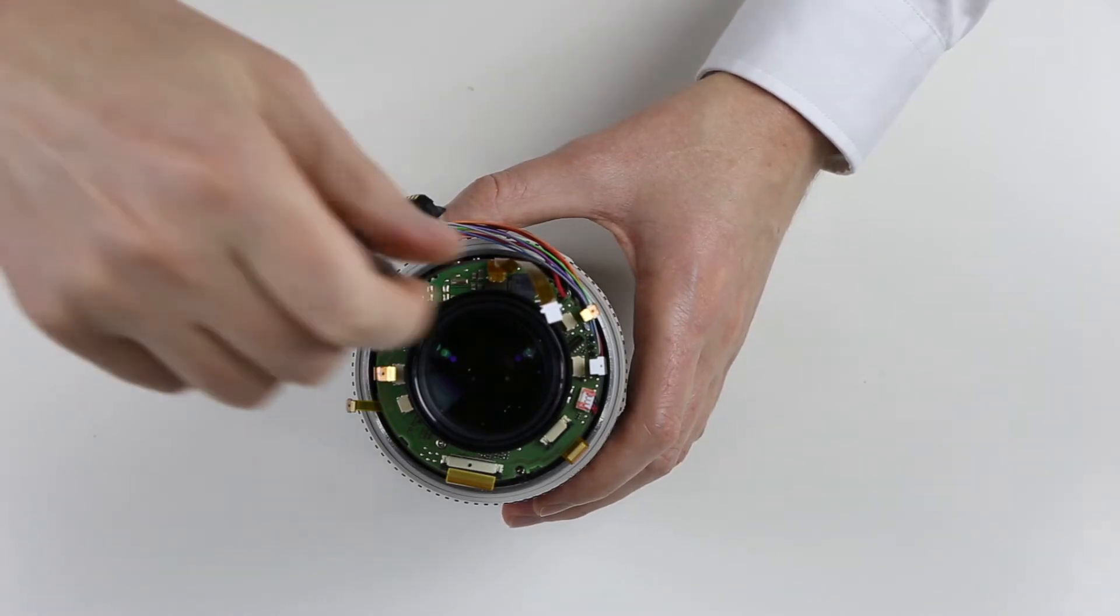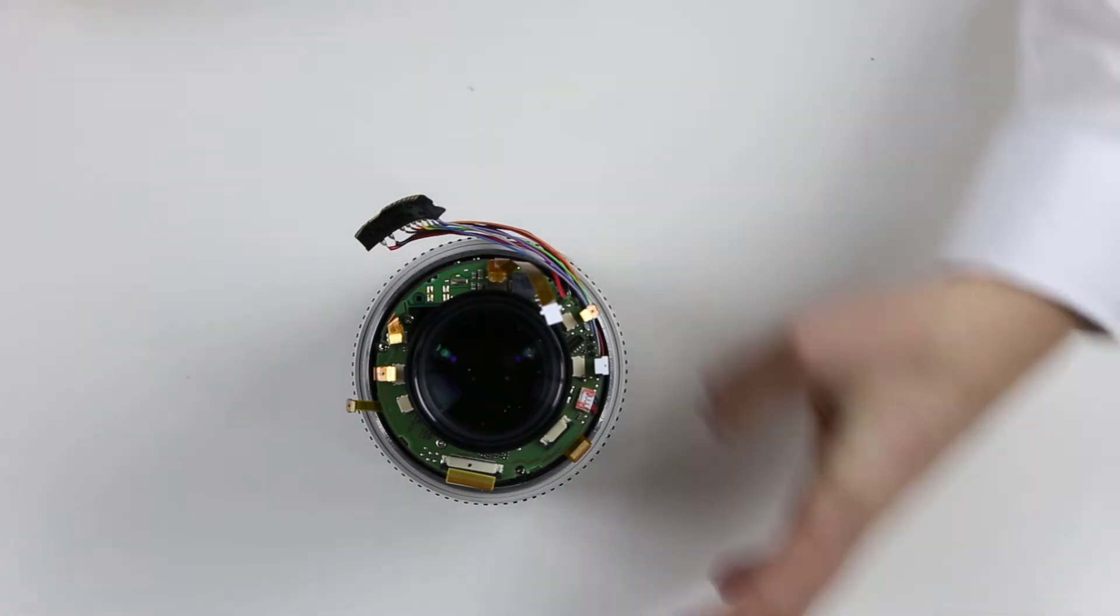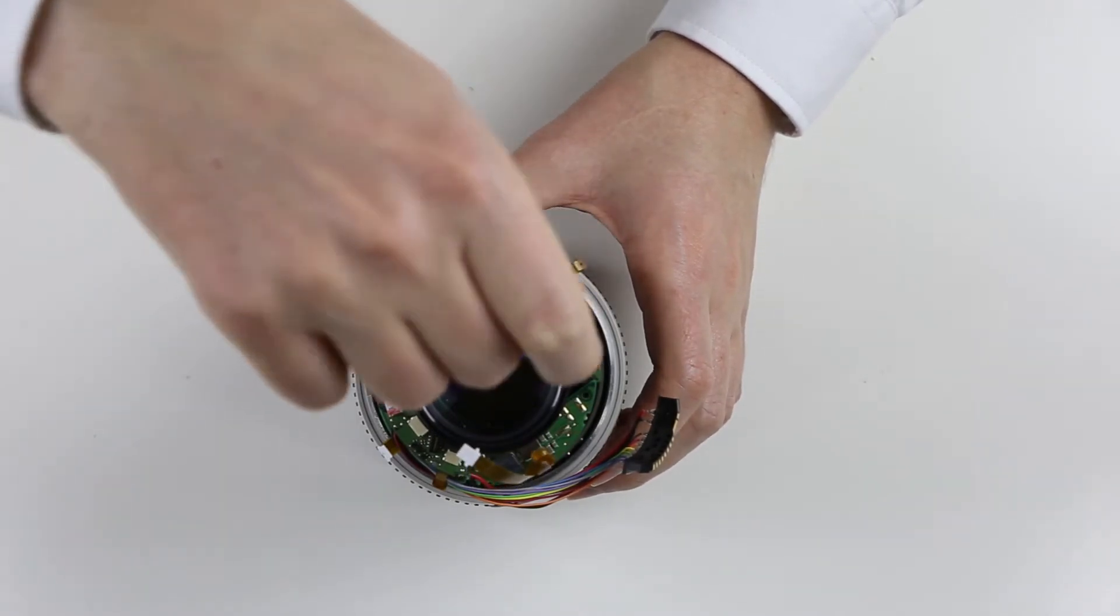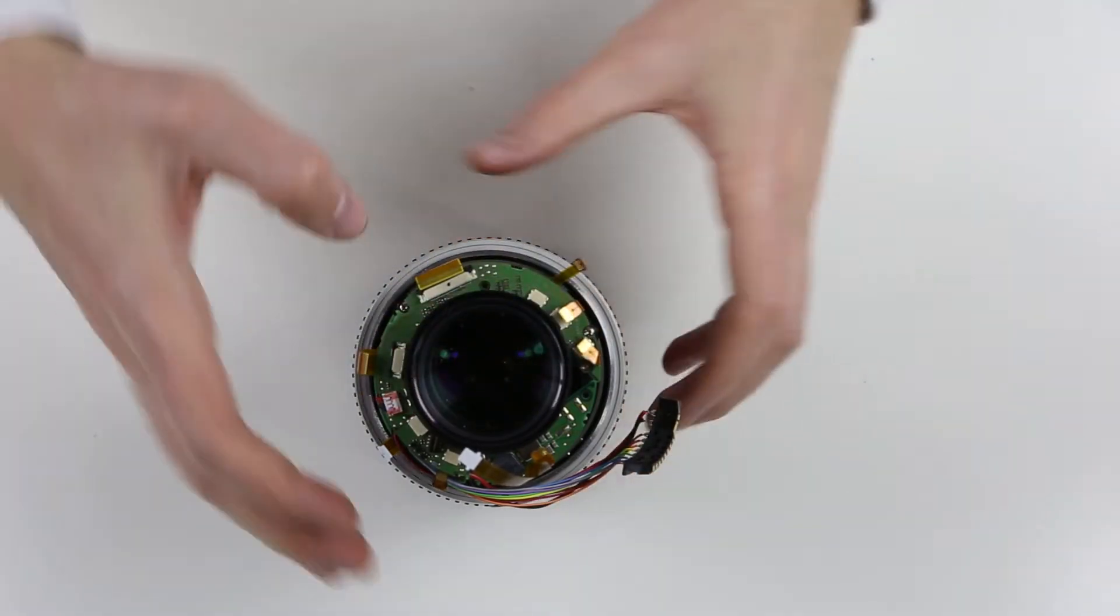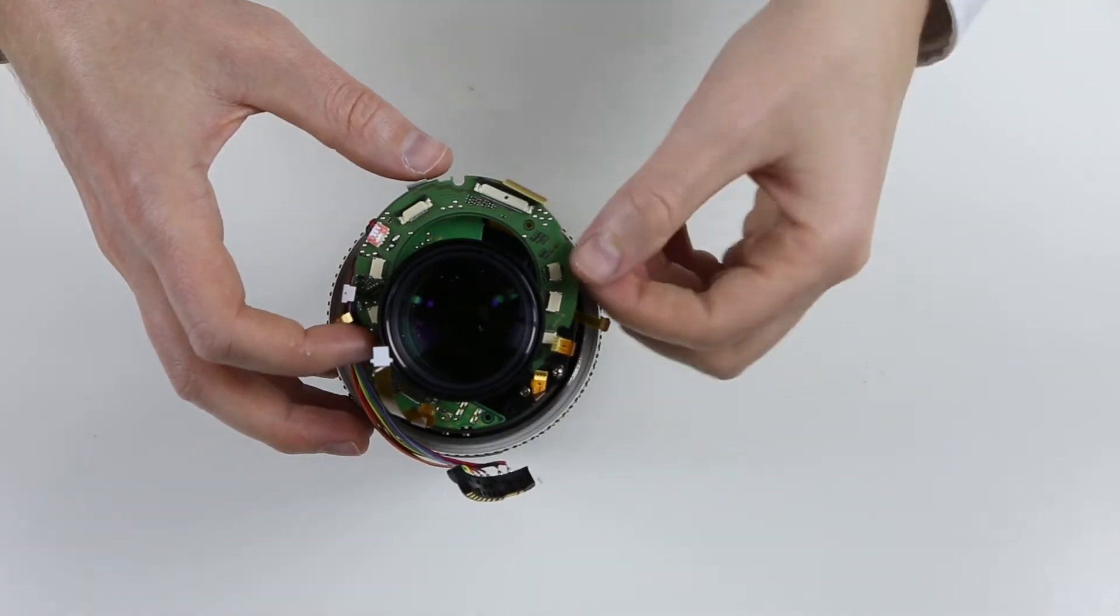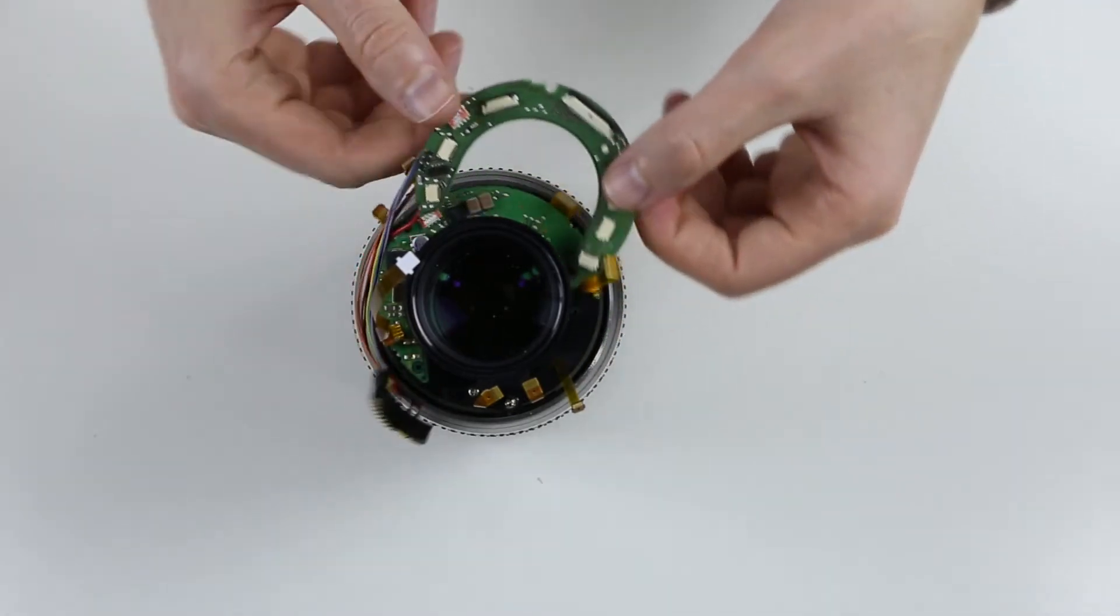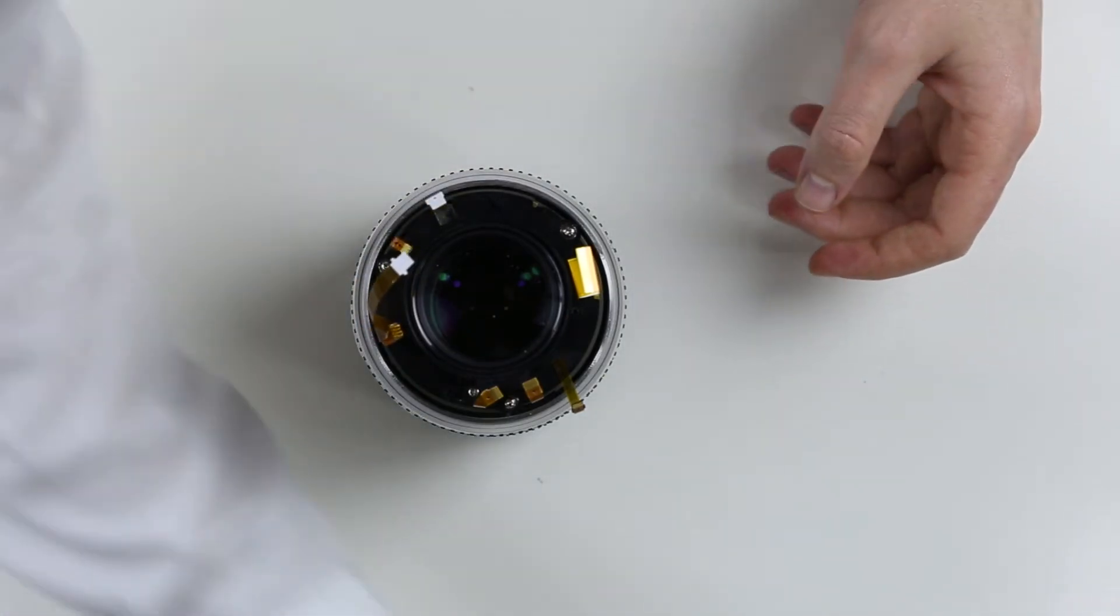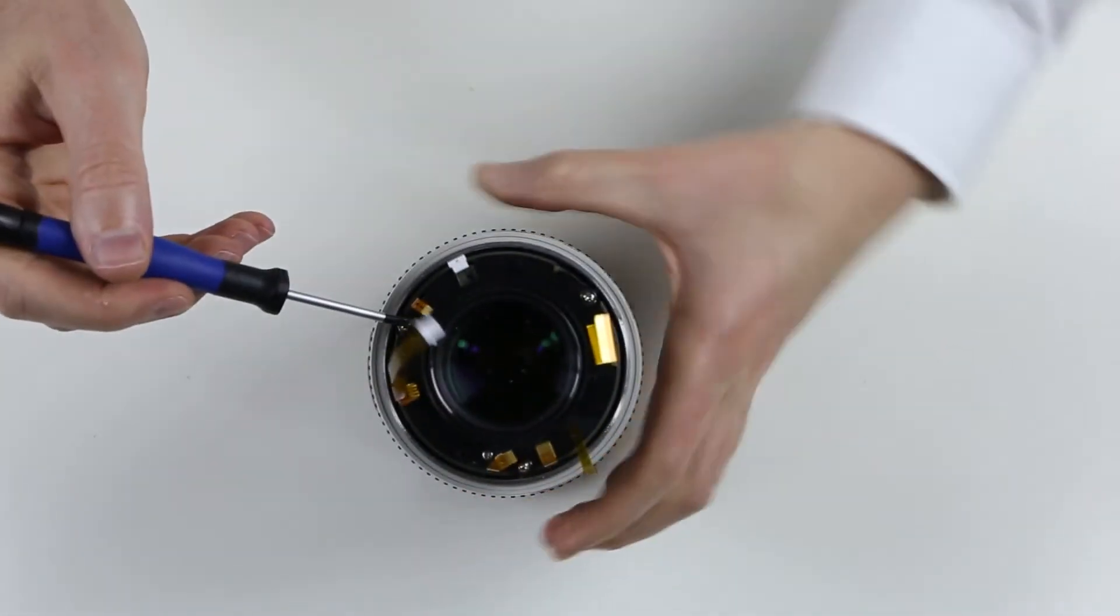Remove the two screws which are holding the two PCBs. The next step is to remove the back lens element by removing those three screws.